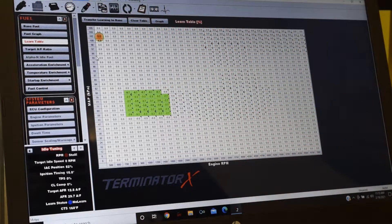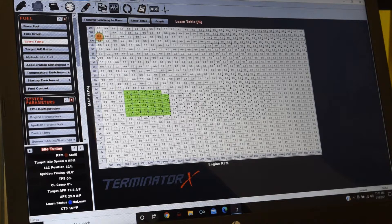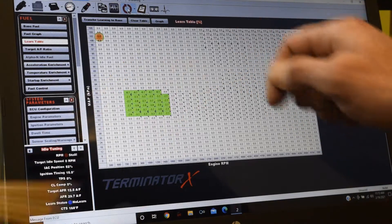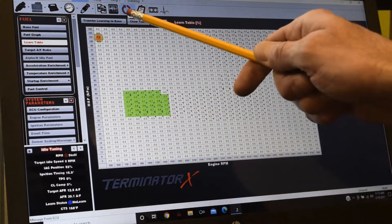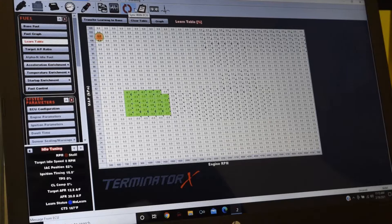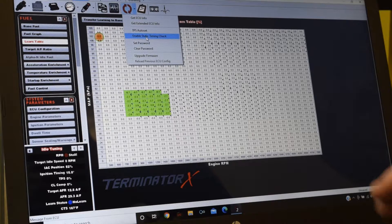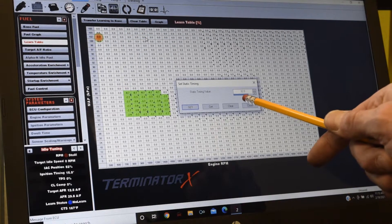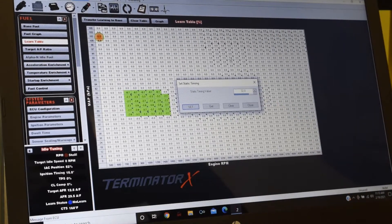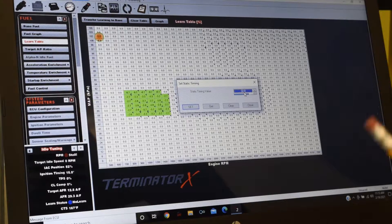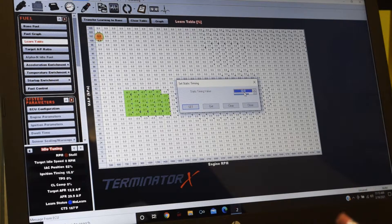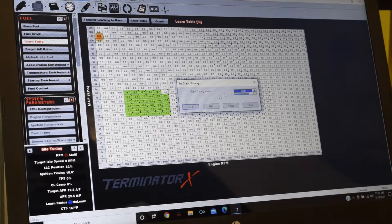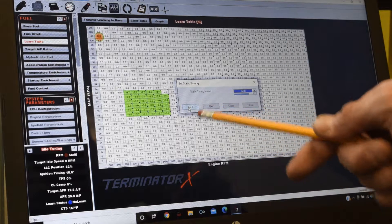We're going to start the engine and when the engine's running we're going to go to this sync menu. There's a drop down list, we'll scroll down to enable static timing check. We're going to click that and in this box we're going to enter a value. You see that we have 32 entered - that's our maximum timing we typically run in a lot of our street engines. So we're going to select 32 and then we'll go over here and we will hit set.